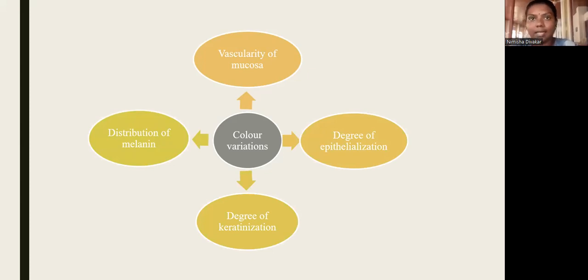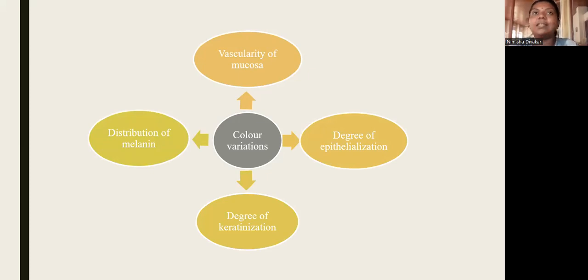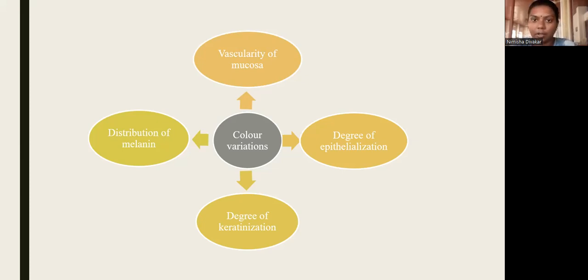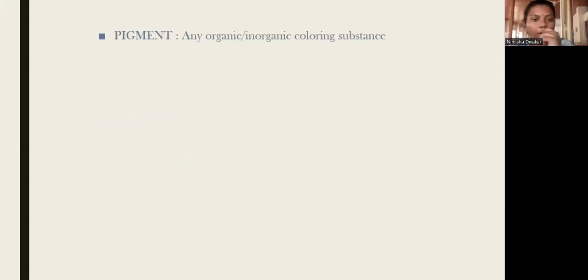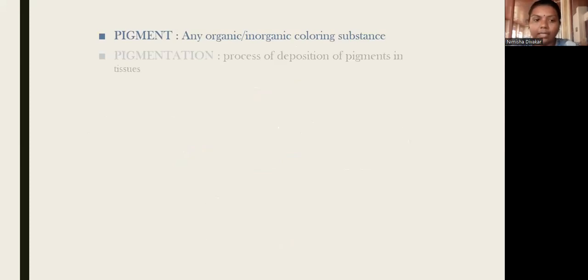Pigmented lesions of the oral cavity can be divided based upon color, location, etiology, and predisposing factors. There are mainly exogenous and endogenous pigmentation. First, there is physiological and pathological pigmentation, which is again subdivided into exogenous and endogenous pigmentation. We will first be discussing about exogenous pigmentation of the oral cavity.